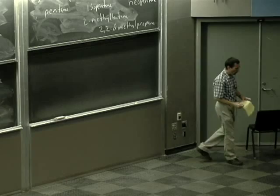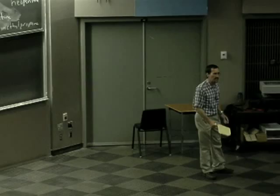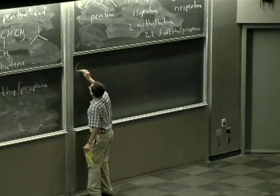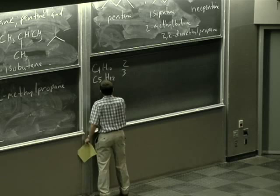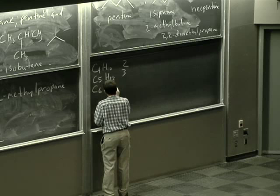So, as we go along the alkanes, the number of isomers increases dramatically. Butane, I'm going to write this all out just so you can see the whole trend. Butane has 2 constitutional isomers. Pentane, we saw 3.